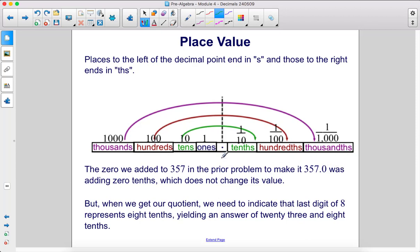The zero we added to 357 in the prior problem makes it 357.0. That was adding 0 tenths, which does not change its value. But when we get our quotient, we need to indicate that last digit of 8 represents 8 tenths, yielding an answer of 23 and 8 tenths.